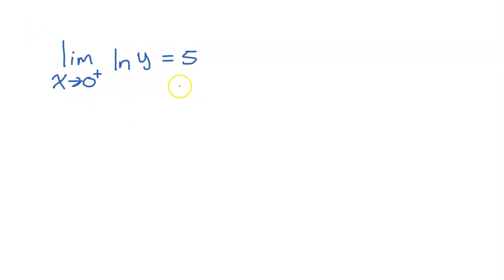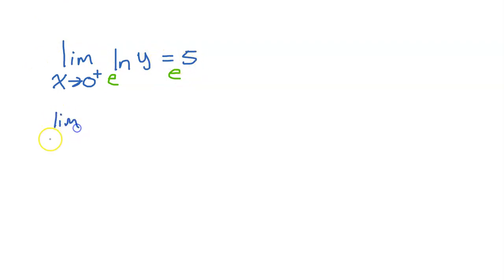That operation still works if you have the limit. So if I knew that the limit as x approaches 0 from the right of natural log y is equal to 5, and I wanted to find out what the limit of y is by itself, I could still exponentiate both sides, and it would still have the same limit. So I could say the limit as x approaches 0 from the right of y is equal to e to the fifth power.